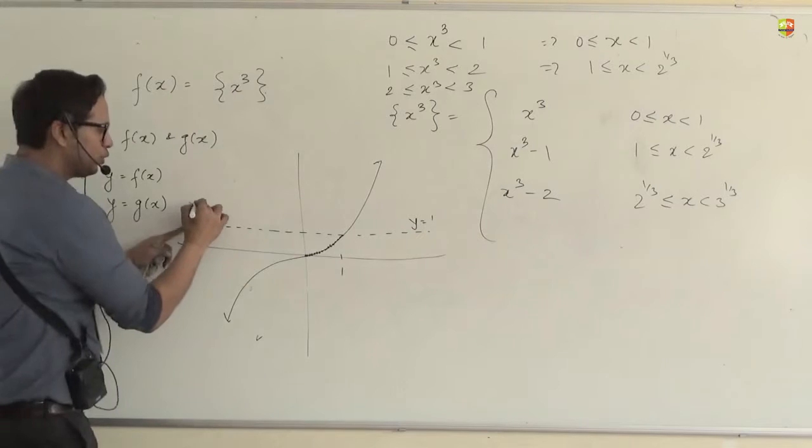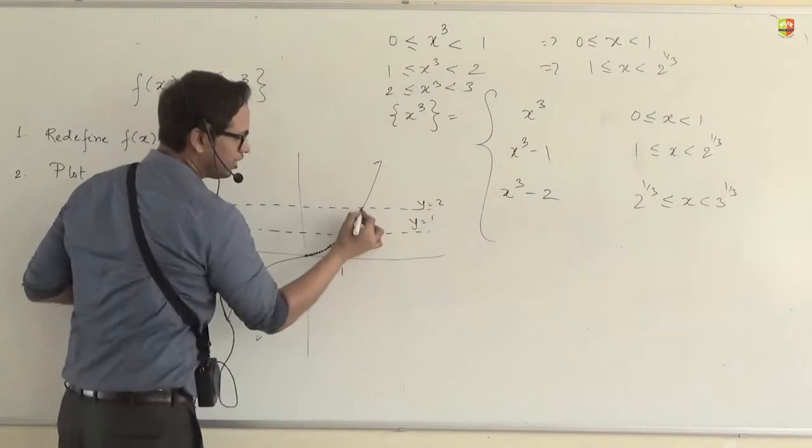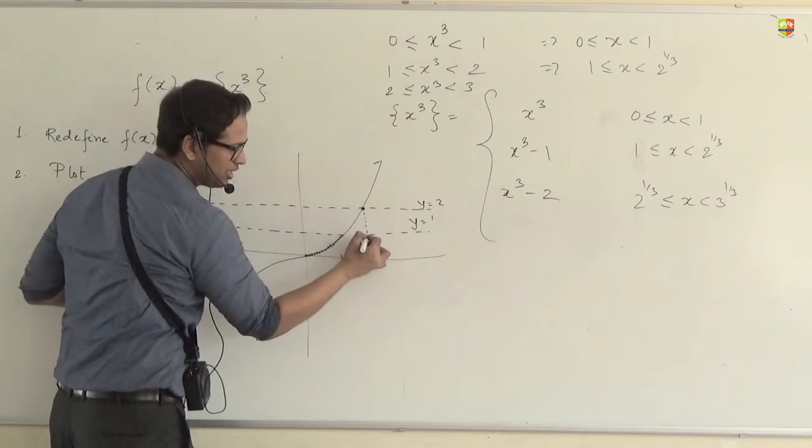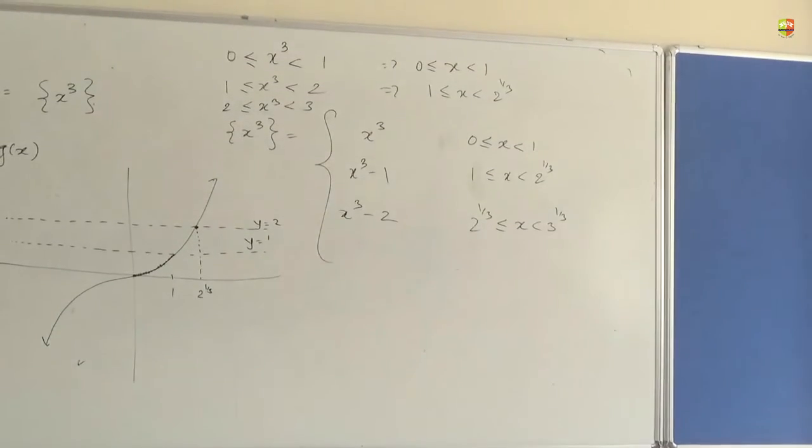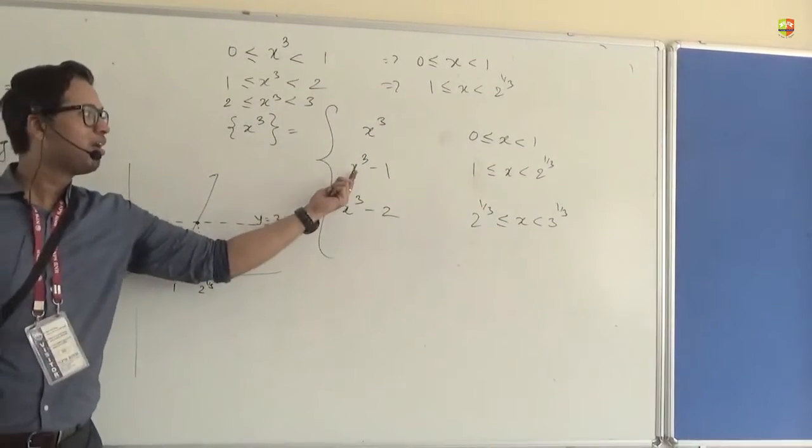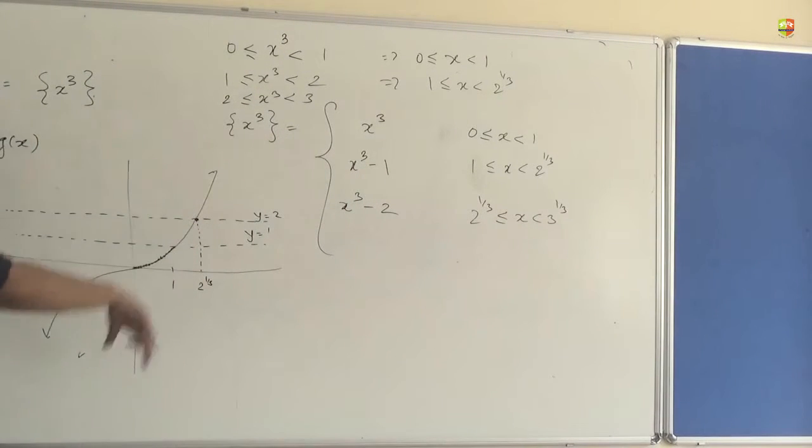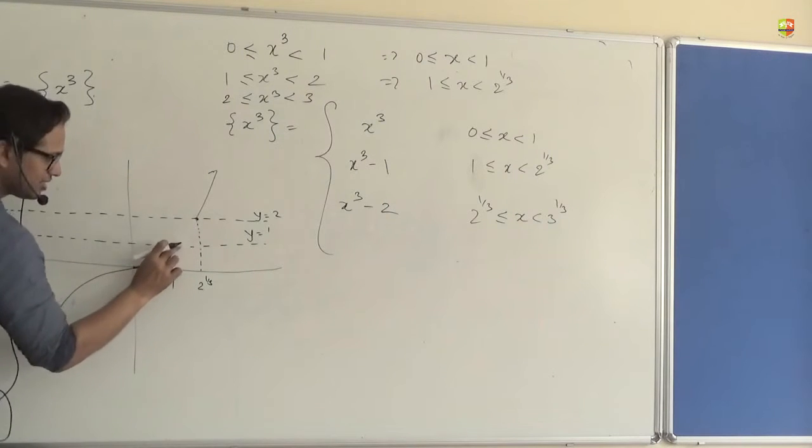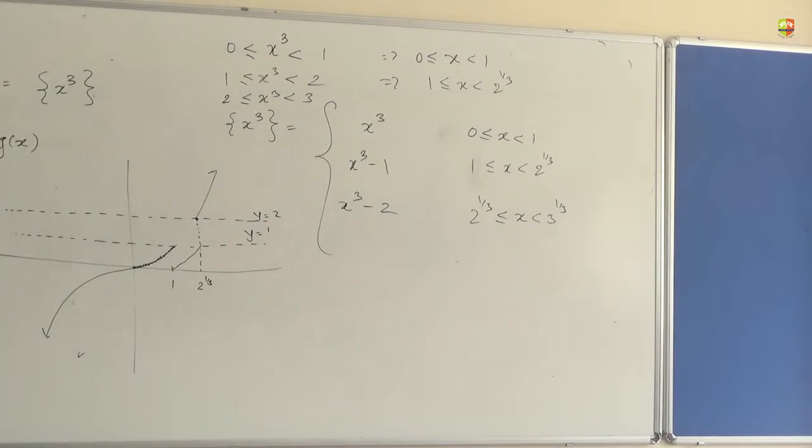Now between 1 and 2, let's say I draw y equal to 2 line here. Now this point will be cube root of 2. So when you are between 1 and cube root of 2, you have to draw x cube minus 1. So this part of the graph will drop by how many units? Correct? Yes or no?